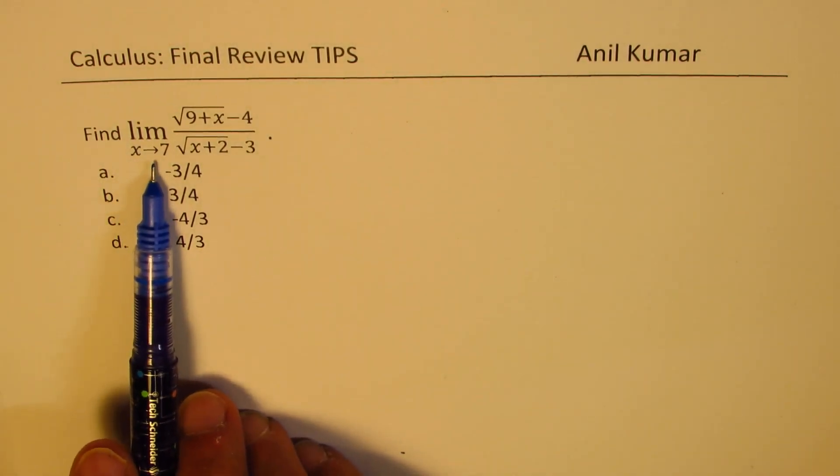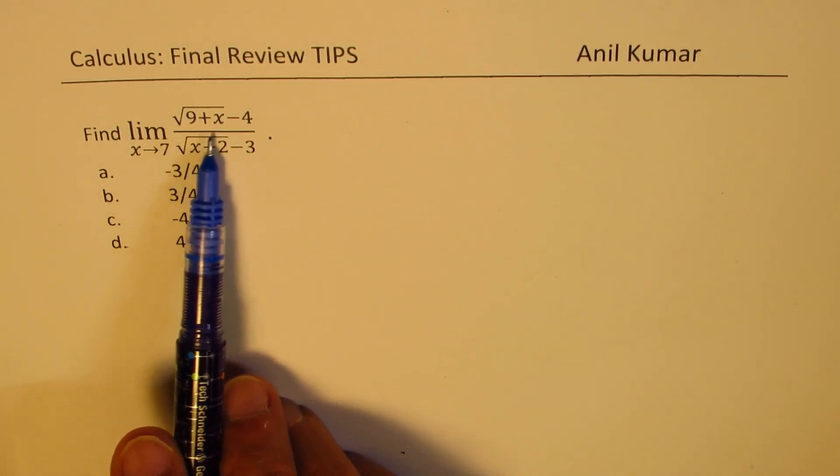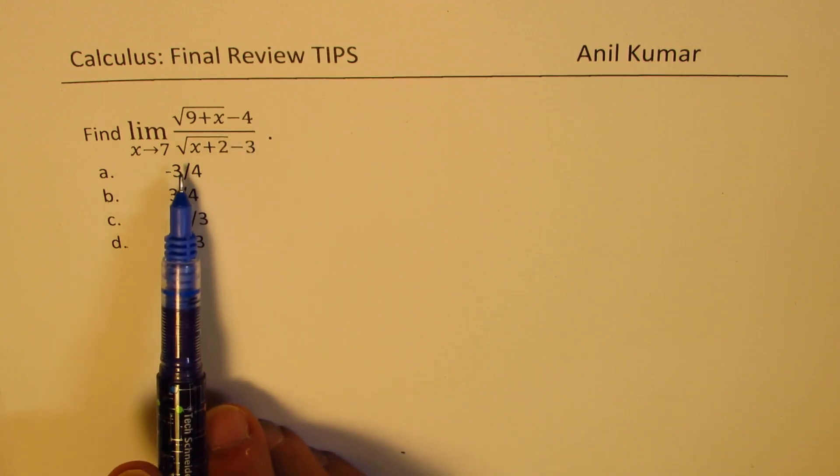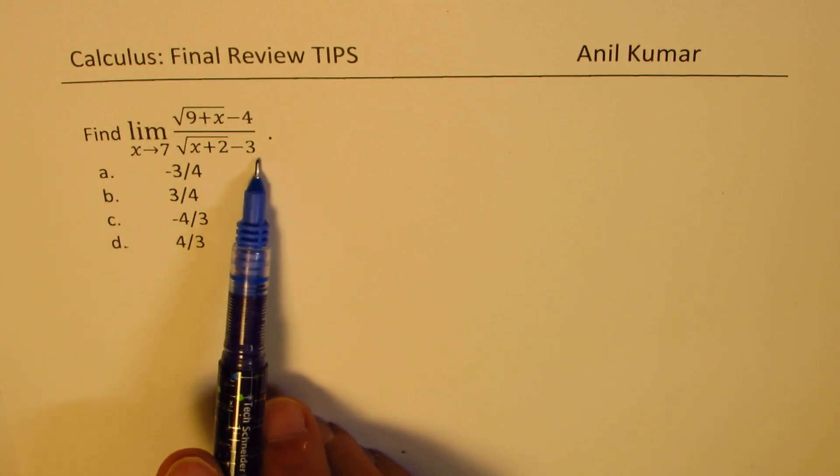So here is a very interesting question based on limits. Find limit when x approaches 7 for square root of 9 plus x minus 4, divided by square root of x plus 2 minus 3.